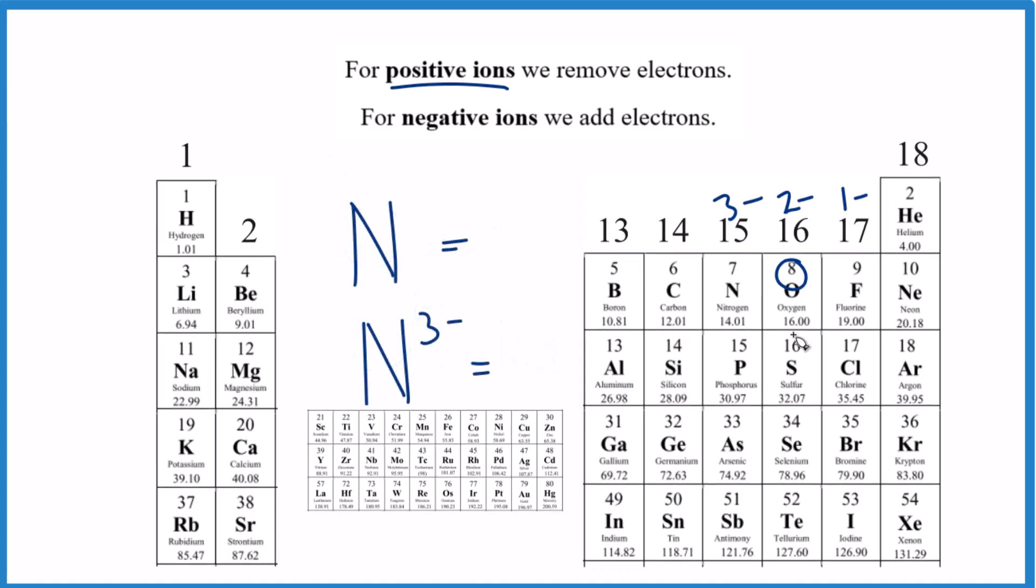Now you try one. We have nitrogen here, and then the nitride ion. How many electrons for nitrogen, neutral nitrogen, and then the nitride ion? Give that a try.